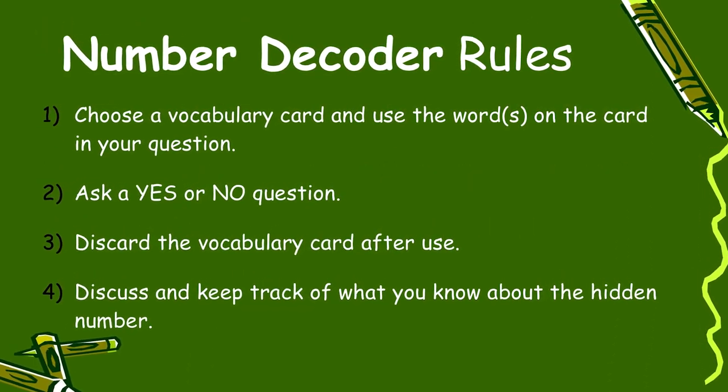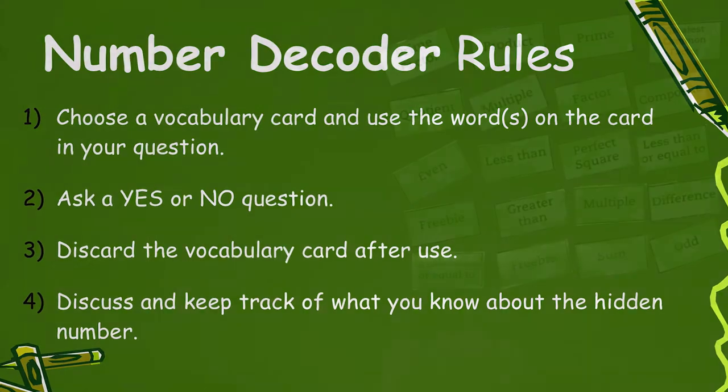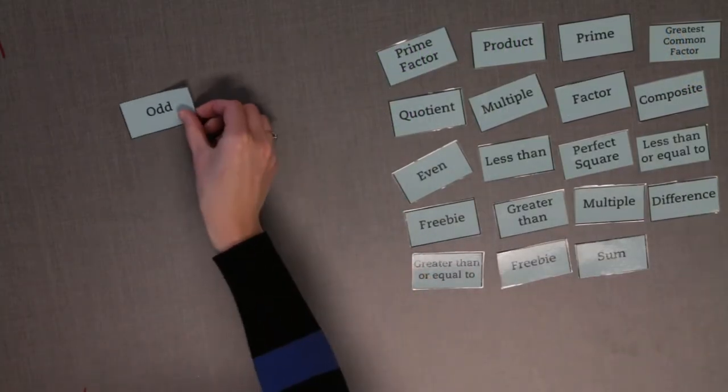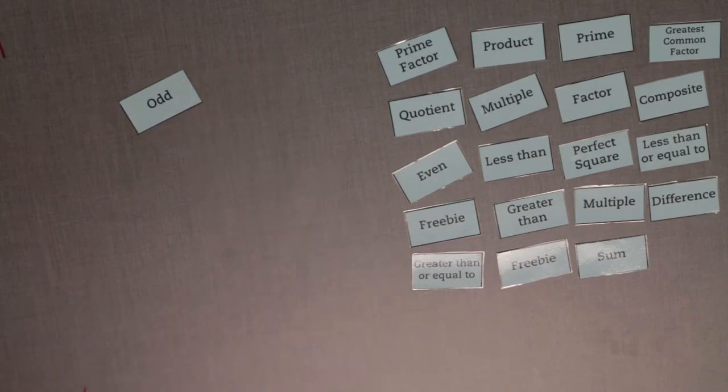Now you are ready to play. The player to the left of the number generator goes first. On your turn, choose one vocabulary card. You must ask the number generator a yes or no question using that vocabulary word to help figure out the code number.